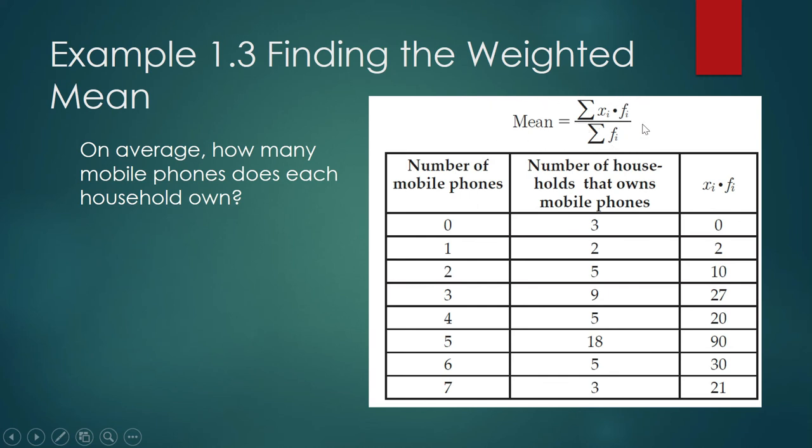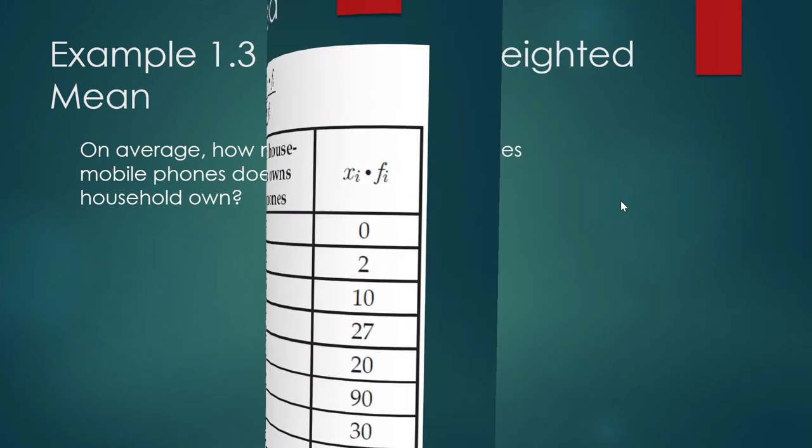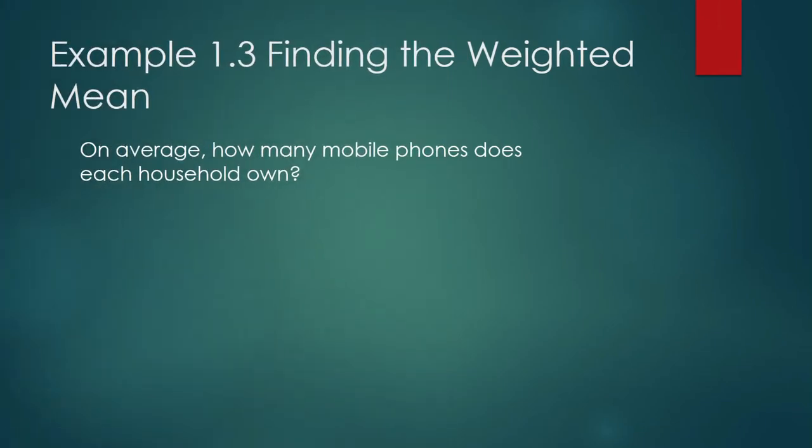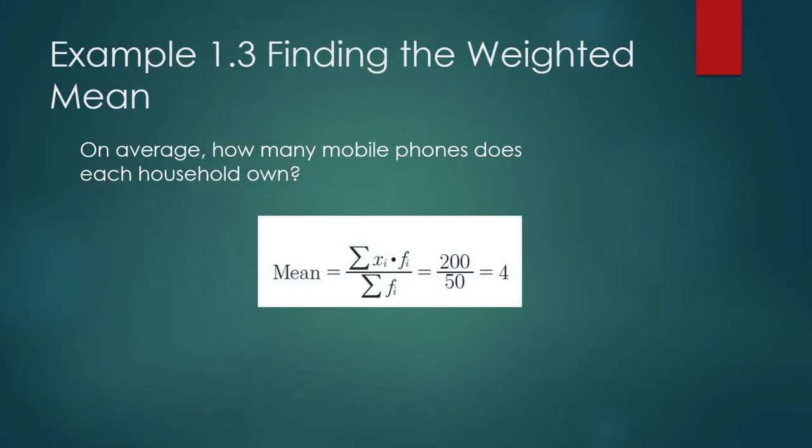And that is how we do it. And then we divide everything by what is this? The summation of f sub i. This one. And we know this one to be equal to 50. And so on average, the number of phones owned by each household is 4.